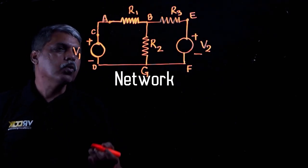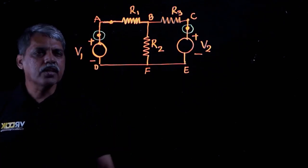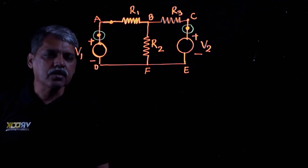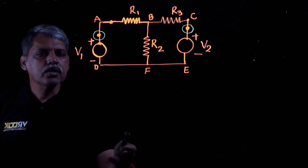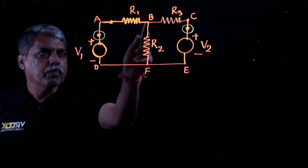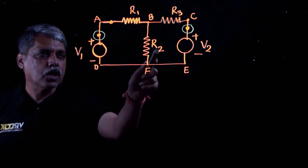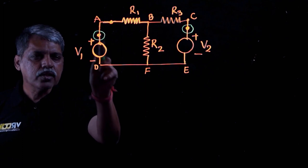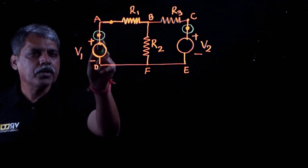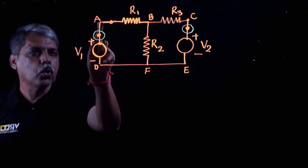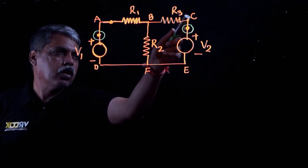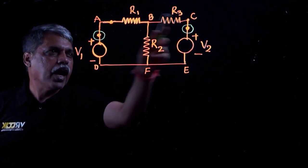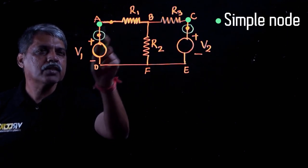We can apply Kirchhoff's voltage law and develop loop equations for analyzing this network. In this circuit, between terminals A and B we have resistor R1, between B and C we have resistor R3, between B and F we have resistor R2, between C and E we have voltage source V2, and between A and D we have voltage source V1. One terminal of the voltage source and the resistor are connected together to form node A, and one terminal of resistor R3 and the positive terminal of voltage source V2 form node C. Nodes A and C are called simple nodes because only two elements meet at each junction.